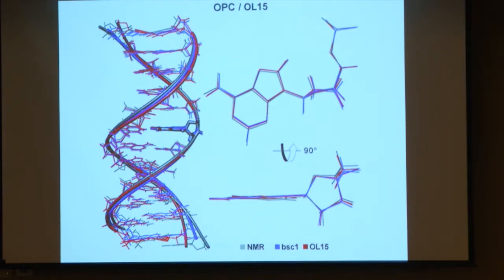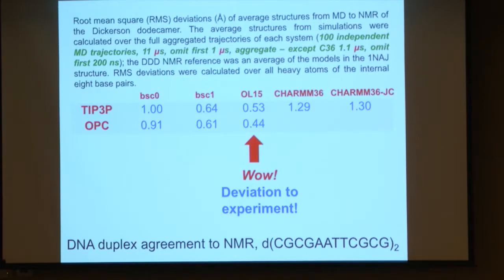This was shown in Rami's slide where we can get remarkable agreement with the average NMR structures for the Dickerson dodecamer sequence — one of the best, highest-resolution NMR structures. There are twenty structures that they produce; we average them together and compare with the latest force fields, including the Barcelona one force field from Orozco and the OL-15 from the Šponer team. We get agreement that's sub-half angstrom, which is remarkable — in the old days we were happy if we were two angstroms away.